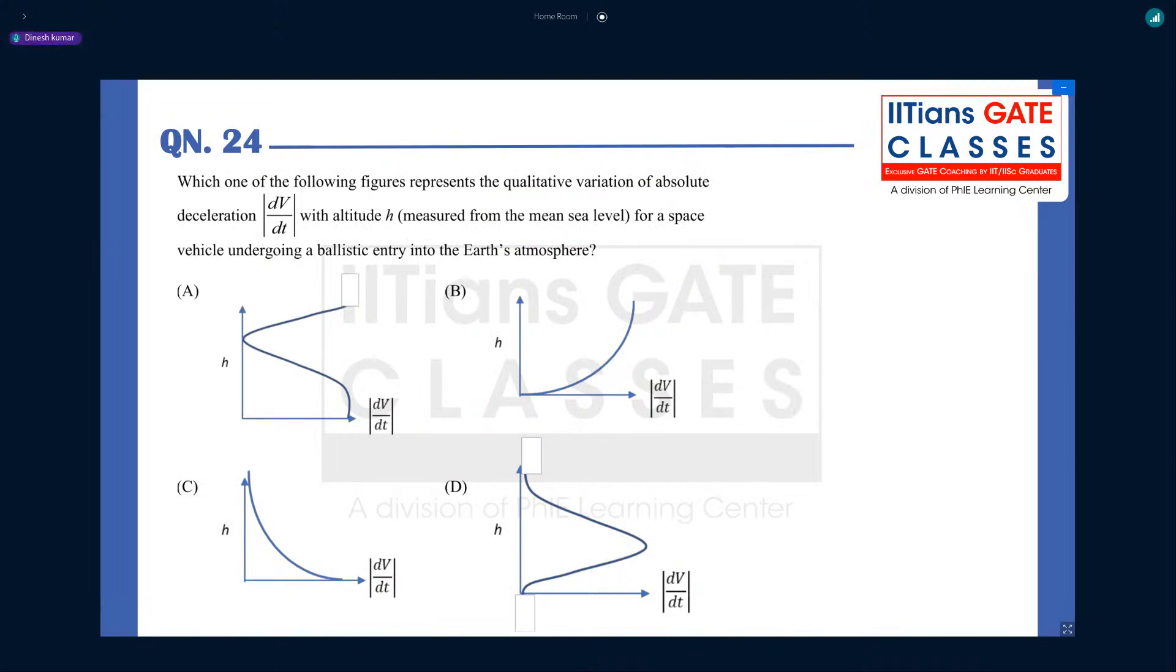The first question from Space Dynamics is question number 24 and it is MCQ. This question number 24 is one of the unusual questions from Space Dynamics. And this question is from Flight Vehicle Entry Trajectory. It asks which one of the following figures represent the qualitative variation of absolute deceleration with altitude for a space vehicle undergoing ballistic entry into the earth atmosphere. There are four options given. For me in this question nothing much to explain. The answer is option B.